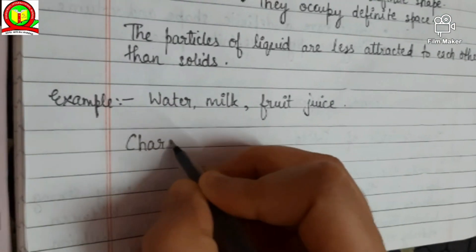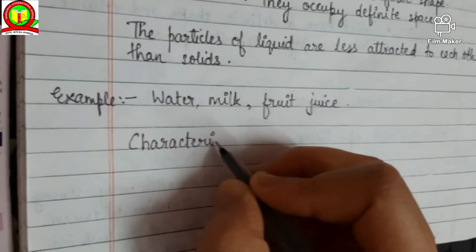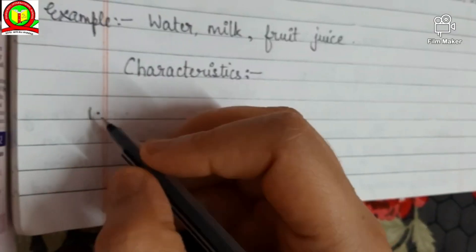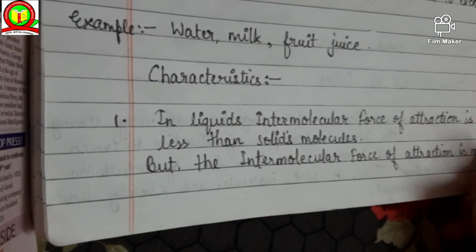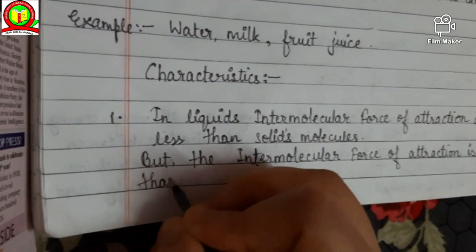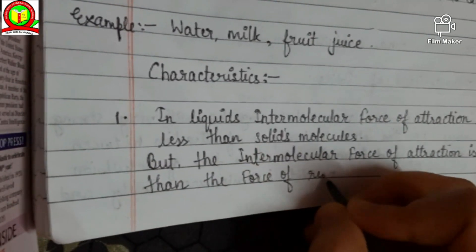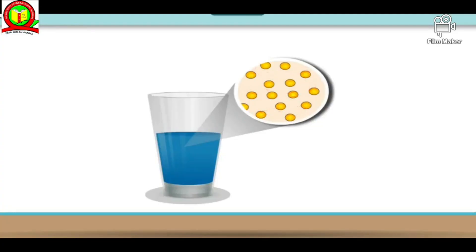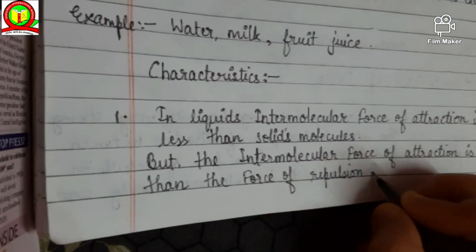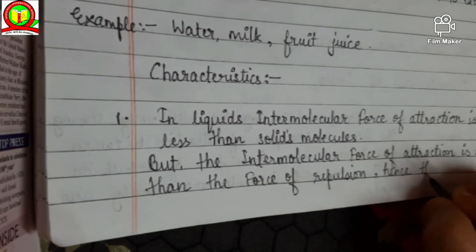Liquids have no definite shape, but they occupy definite space. The particles of liquids are less attracted to each other than in solids. Examples include water, milk, and fruit juice. The intermolecular force of attraction in liquids is less than in solid molecules, but it is still more than the force of repulsion.